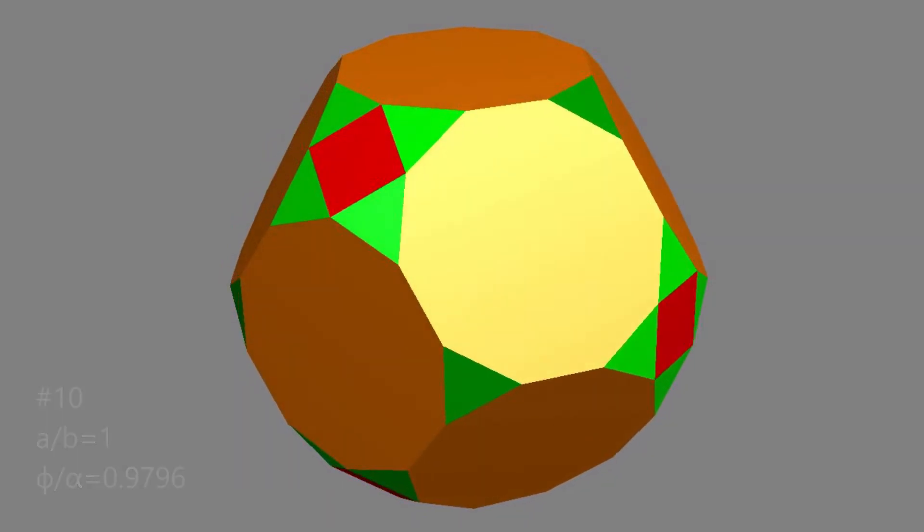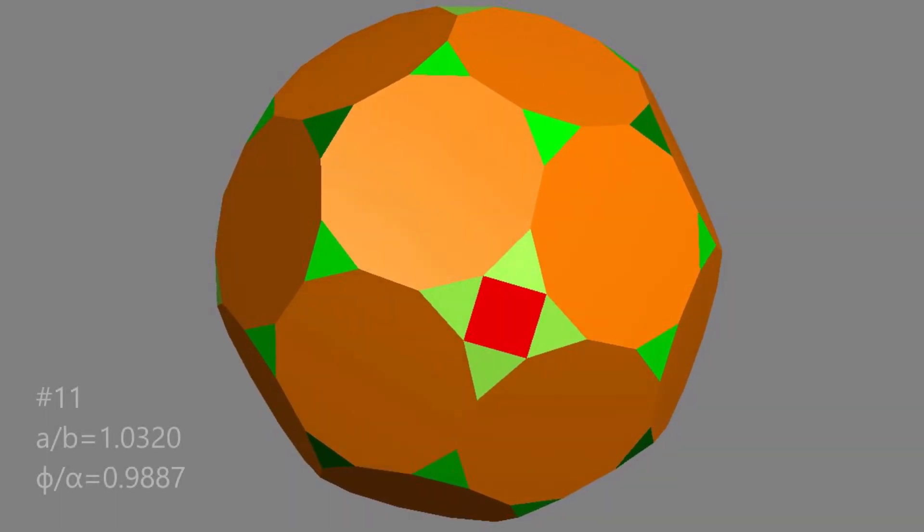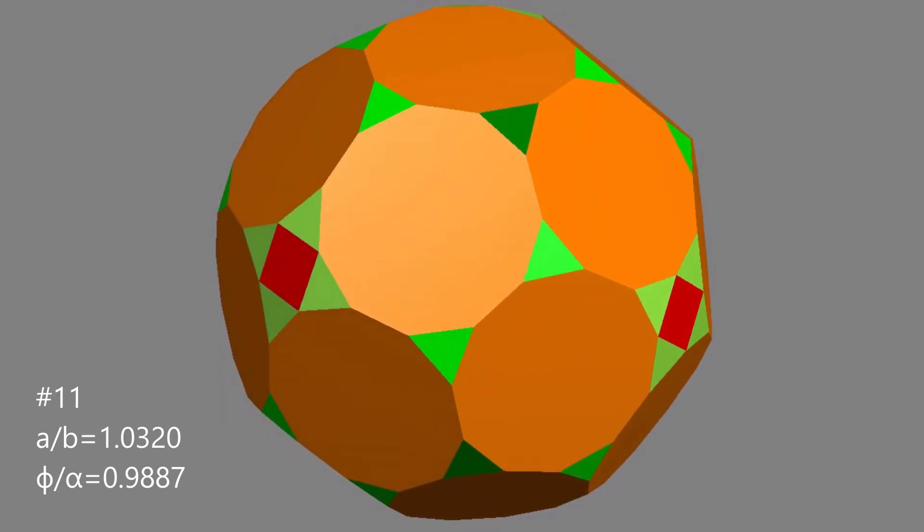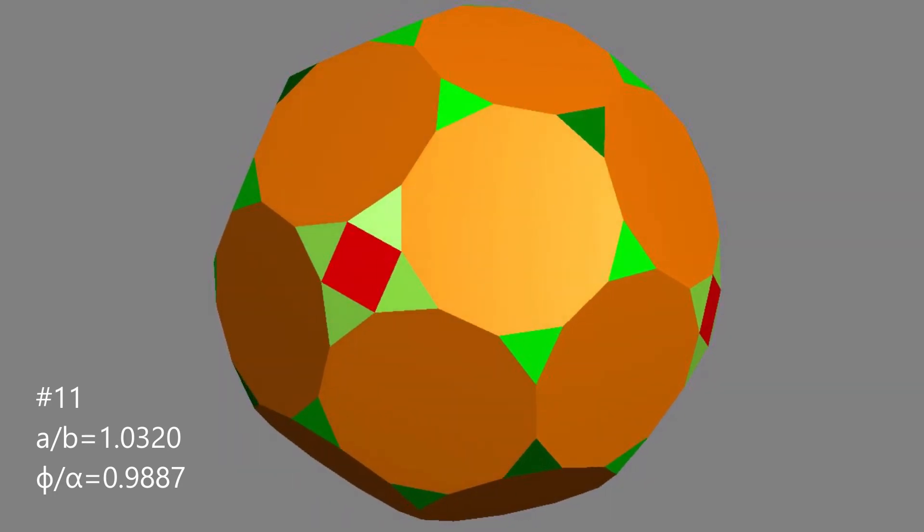And the last one has 11-gons. If you try to do the same design, but with dodecagons, you'll end up with a flat tiling.